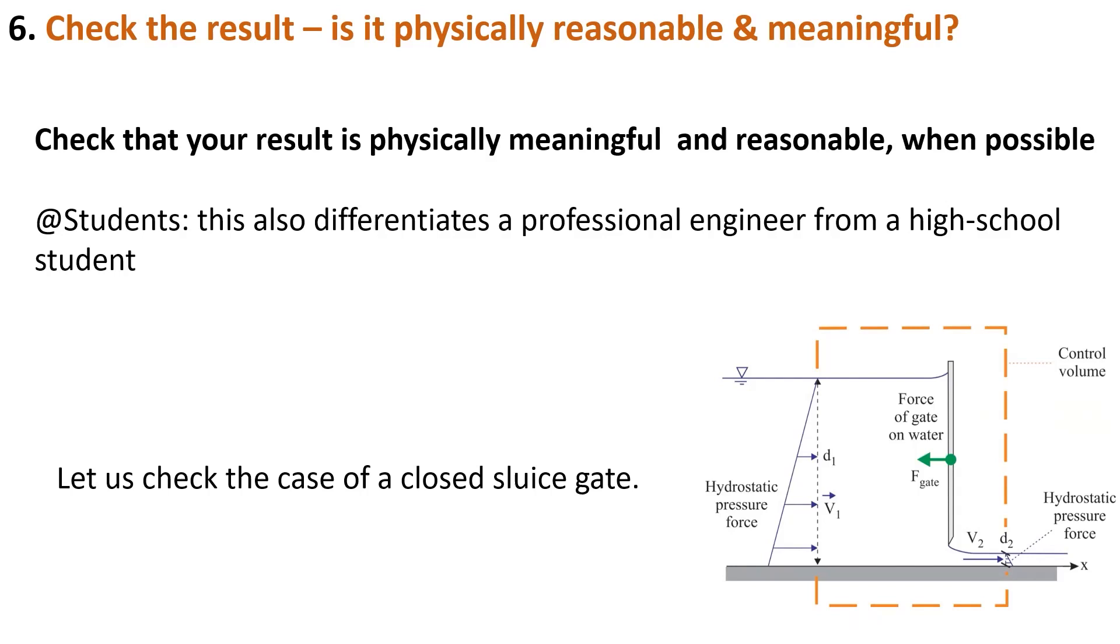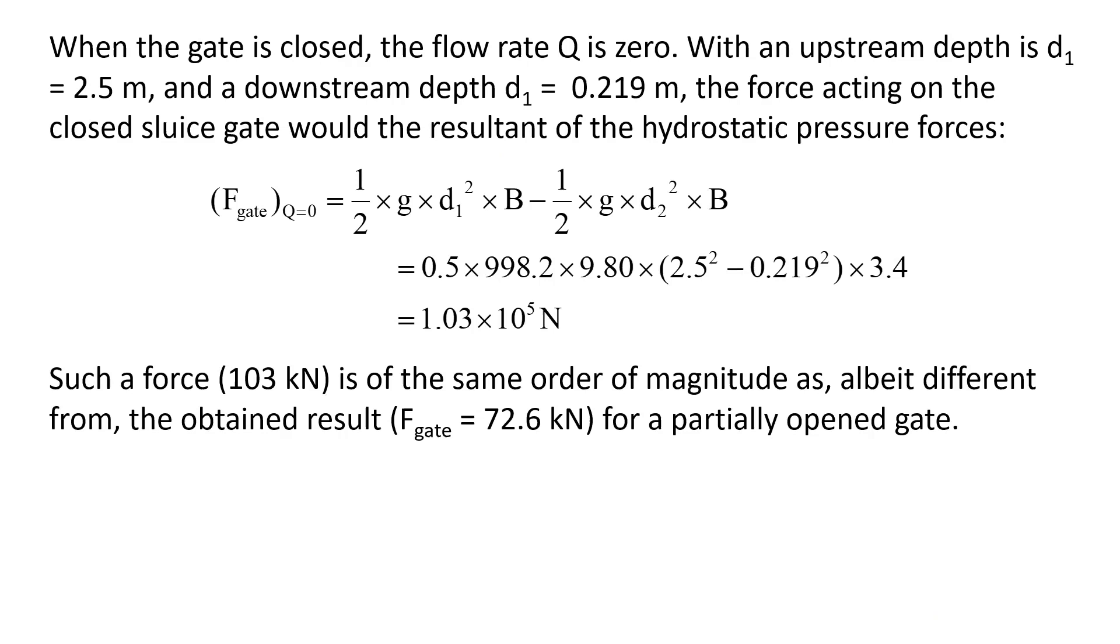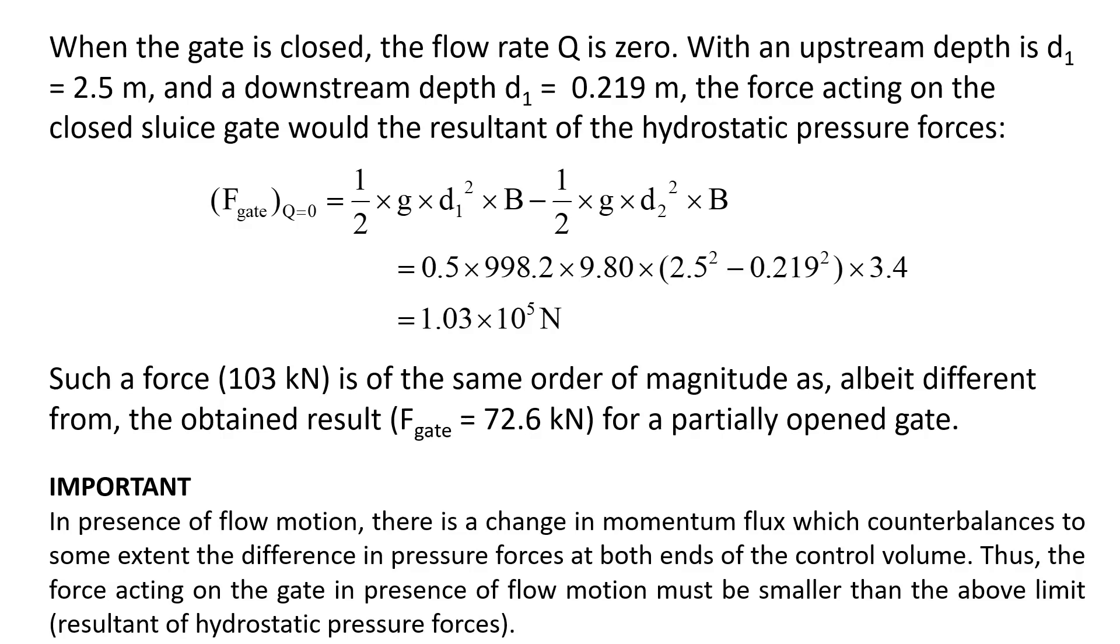We have an upstream depth D1 of 2.5 meters and a downstream depth D2 of 0.219 meters. In this case, the force acting on the gate is a resultant of the hydrostatic pressure forces, which gives a force of 103 kN, which is the same order of magnitude, though slightly different, than when the gate is partially open. The difference is consistent with the change in momentum flux to counterbalance the difference in pressure force.